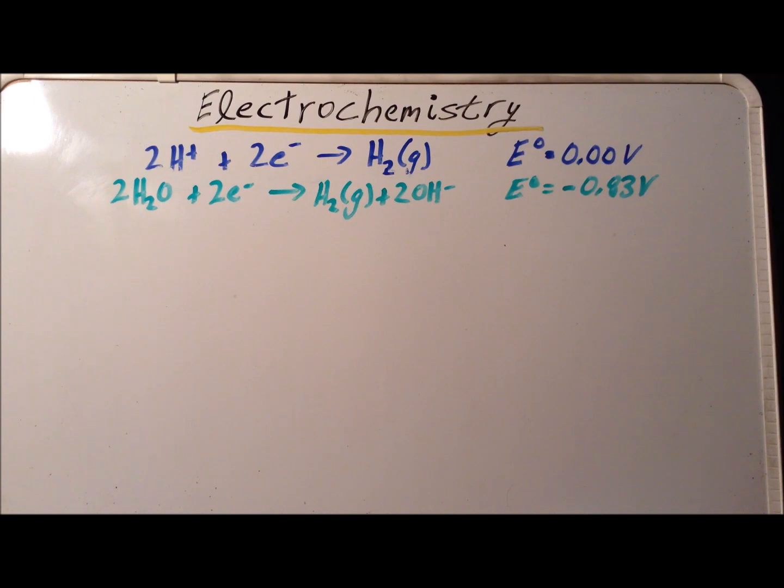The second piece of electrochemical data that we need is the reaction two molecules of water being reduced by two electrons to give us one mole of hydrogen gas plus two hydroxide ions. The standard reduction potential for this reaction is minus 0.83 volts.